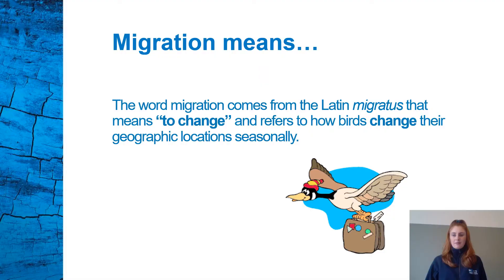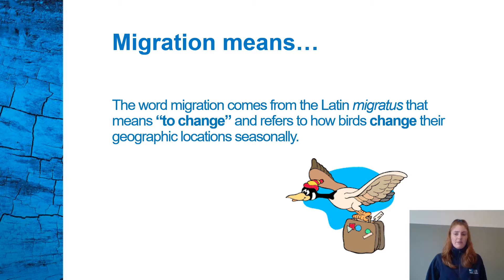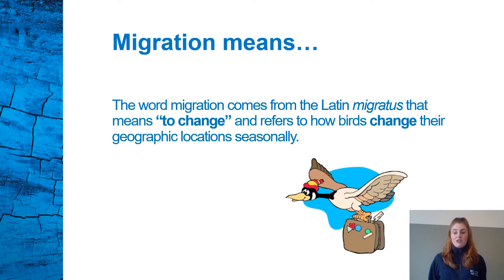So what does migration mean? The word migration comes from the Latin 'migratus,' meaning to change, and refers to how birds change their geographic locations seasonally — moving from one place in the world to another. Seasonally means relating to the four seasons: Winter, Spring, Summer and Autumn. These are the four seasons we get in Scotland, though seasons can change from country to country.